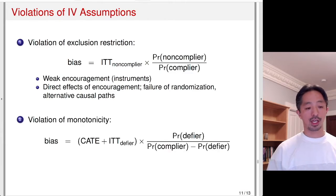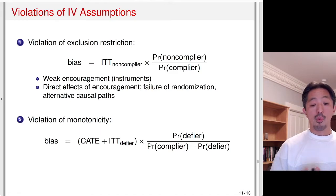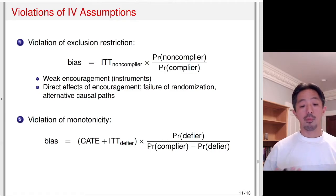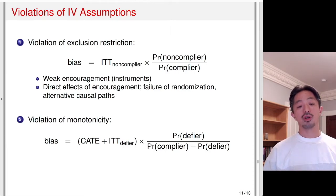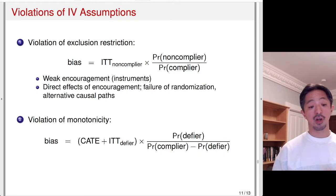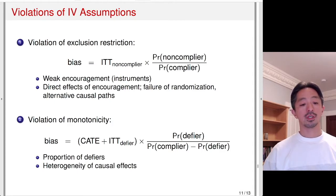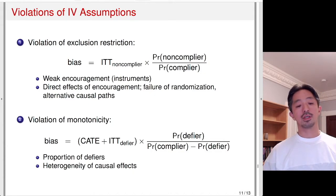The second possibility is violation of monotonicity, and again we can derive the bias. The bias has two terms: the second term is the proportion of defiers relative to the difference between the proportion of compliers and the proportion of defiers. If the proportion of defiers is as large as the proportion of compliers, that term would be large. The first term depends on the ITT effect for defiers — if that term is large, the bias is large. It depends on the proportion of defiers and how different the causal effects are between the complier average treatment effect and the ITT effect for defiers.